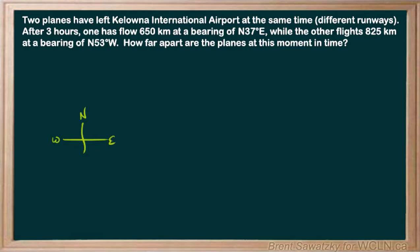Let's take a look at that first plane. It's going 650 kilometers at a bearing of north 37 degrees east. When it's laid out like that with that bearing, you're facing north — that's your reference point. You're going to turn 37 degrees from that reference point. In this case, we're turning 37 degrees east. So we draw that in and say we turned 37 degrees from north towards the east, and that distance is 650 kilometers.